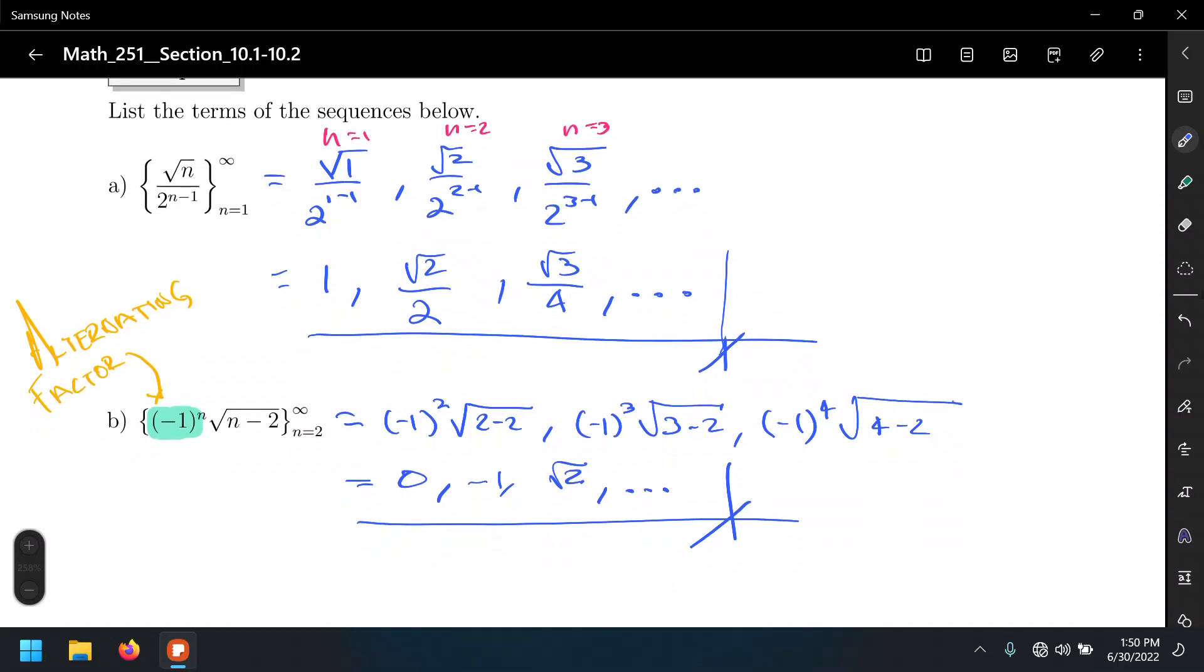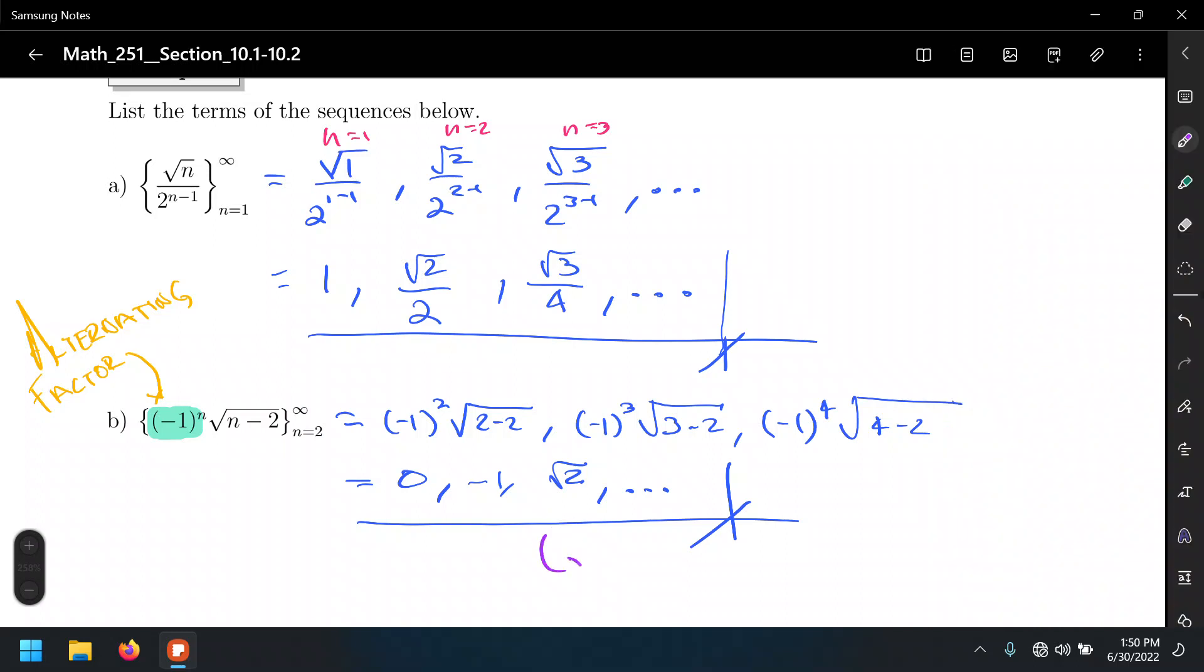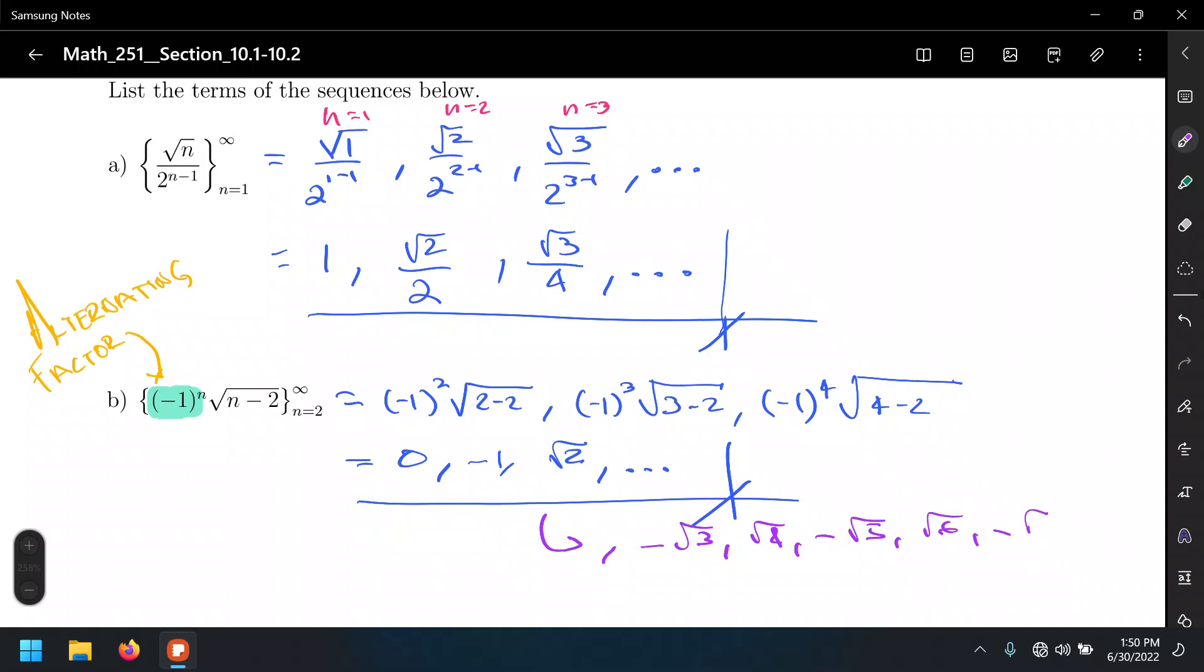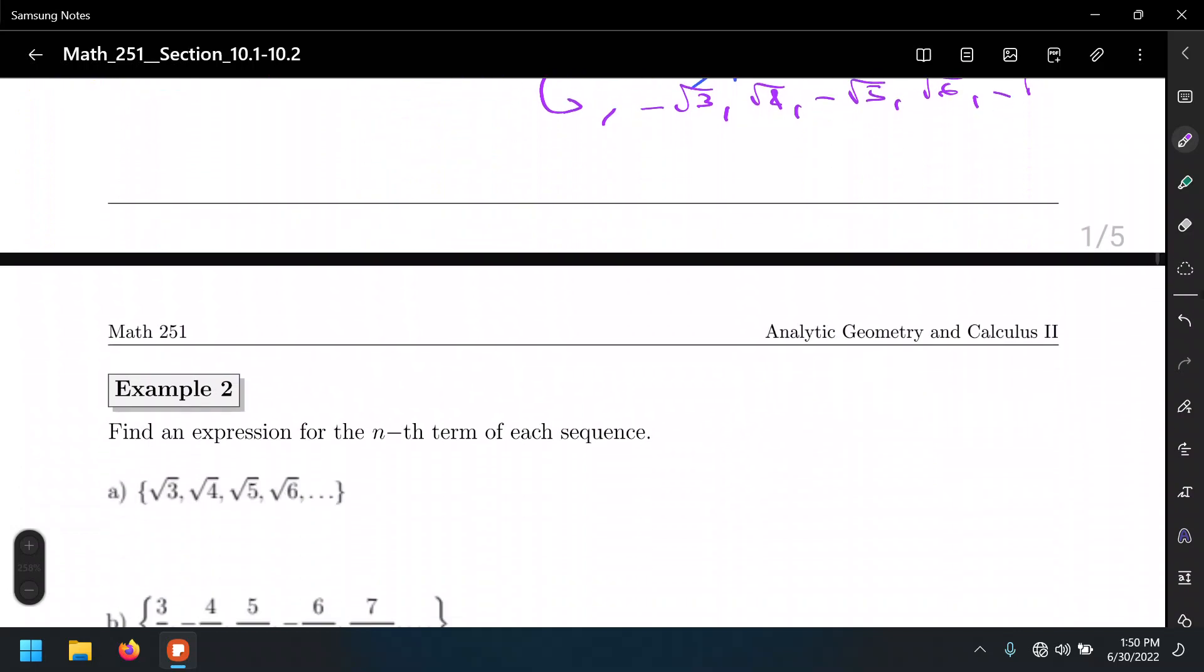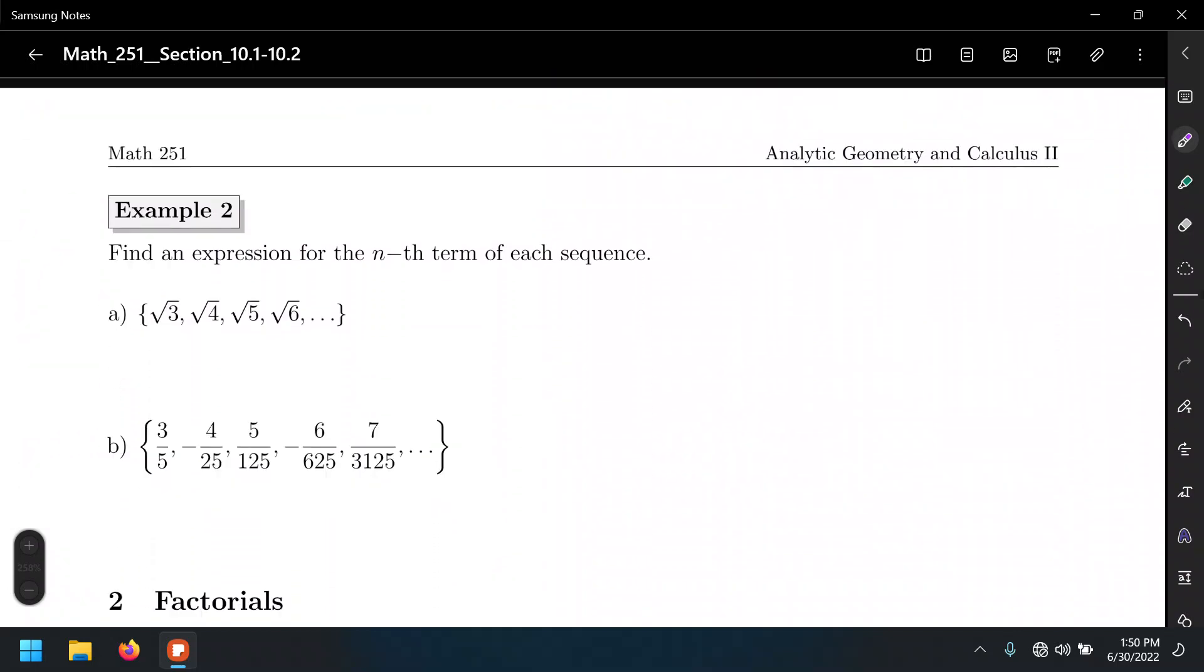Inductively, you can continue with this sequence. The next one would be negative root of 3, root of 4, negative root of 5, root of 6, negative root of 6, et cetera. So that's expanding some of the terms of the sequence.